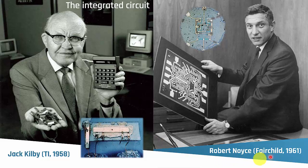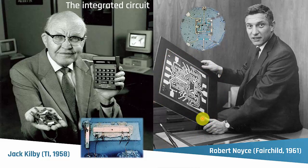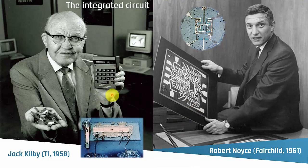That's when Robert Noyce, CEO of Fairchild and later one of the founders of Intel — one of the 'traitorous eight' who left Shockley Labs and moved to Silicon Valley — was able to make isolation productizable. He used a reverse-biased PN junction to isolate between transistors and developed metal interconnects in a monolithic process. Jack Kilby and Robert Noyce are credited with inventing the integrated circuit, which enabled scaling and what we have today in our chips.